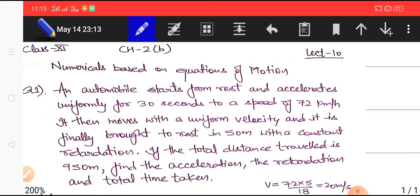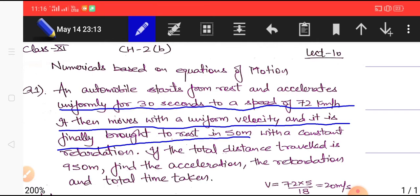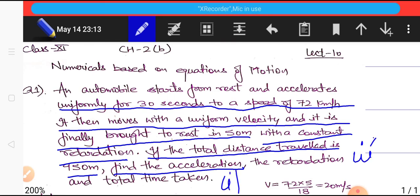Give some time and read this statement carefully. An automobile starts from rest and accelerates uniformly for 30 seconds to a speed of 72 kilometer per hour. It then moves with uniform velocity and is finally brought to rest in 50 meters with a constant retardation. If the total distance traveled is 950 meters, find the acceleration, the retardation, and the total time taken. So give it a pause here and understand the statement completely before we proceed to the solution.